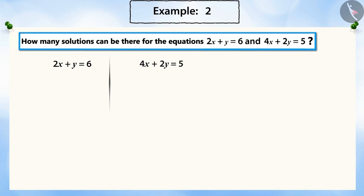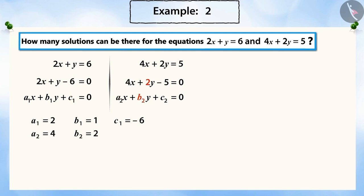Let's compare the equations with the general form of linear equations in two variables. We can see a1 is equal to 2, b1 is equal to 1, c1 is equal to minus 6, a2 is equal to 4, b2 is equal to 2, and c2 is equal to minus 5.